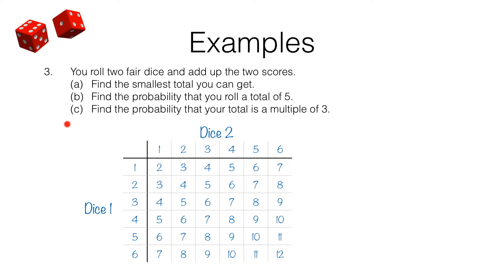Here's what you should have got. This is a sample space diagram showing all the possible outcomes when you roll two fair dice and add up the two scores. We have 36 possible outcomes because it's a six by six table. The smallest possible total you can get is two — that's just by getting a one on each dice. You don't really need the table to work that out: the smallest total would be one plus one, since one is the smallest number on each dice.